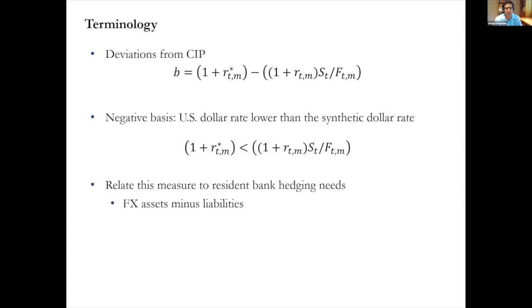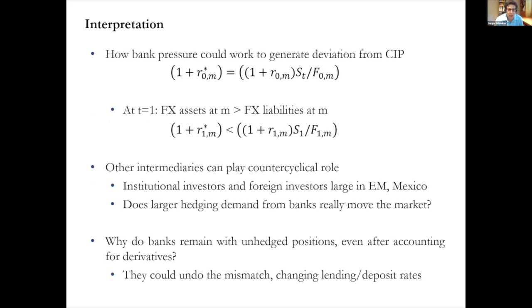What Georgia does is relate this deviation — this basis — to measures of resident bank hedging. Using the Mexican data plus other data, she looks at banks' foreign assets minus foreign liabilities. Banks might affect the basis because if you start from parity, banks typically have more foreign exchange assets than liabilities — they are long in dollars. In the future, what banks in Mexico need are pesos.